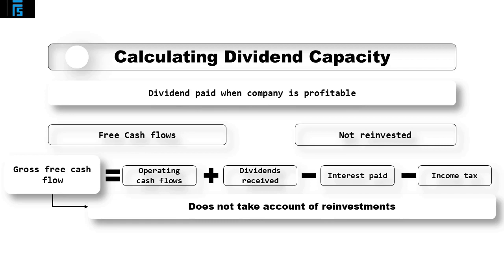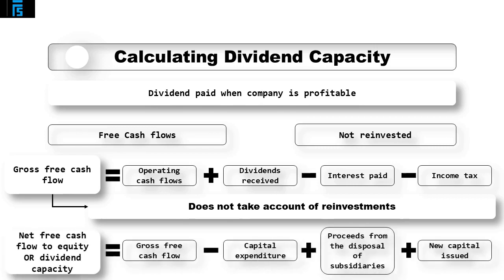When we do incorporate these items into the gross free cash flow formula, we arrive at the so-called net free cash flow to equity, representing the amount of money which may be paid out to shareholders within a year — in other words, its dividend capacity. Net free cash flow to equity is calculated as gross free cash flow minus capital expenditure and acquisitions, plus any proceeds from the disposal of subsidiaries and new capital issued. The formula may easily be applied using information found in a company's financial statements, allowing investors to compare net free cash flow to equity with the level of dividends actually paid out.